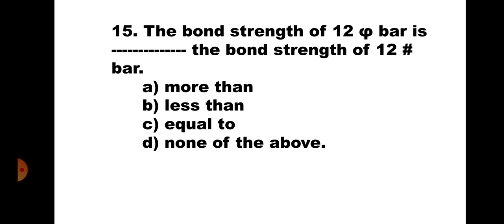Question 15. The bond strength of a 12 phi bar is __ the bond strength of a 12 tor bar. A. More than, B. Less than, C. Equal to, D. None of the above. Here, the bond strength of the same diameter in mild steel versus tor steel is compared. The bond strength of tor steel is more. Therefore, the bond strength of the 12 phi bar is less than that of the 12 tor bar. The correct answer is B. Less than.